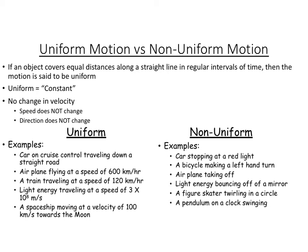For example, if you have a car that's on cruise control and it's traveling down a straight road, or an airplane that's flying at a constant speed of 600 kilometers per hour, or a train traveling at a constant speed of 120 kilometers per hour. Basically means that the velocity is not changing. That's called uniform motion.